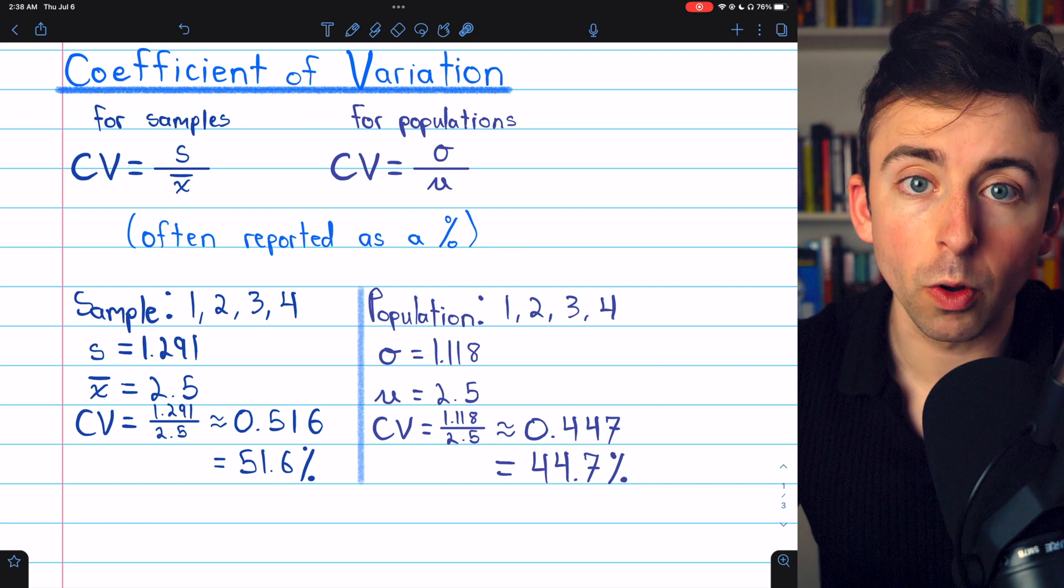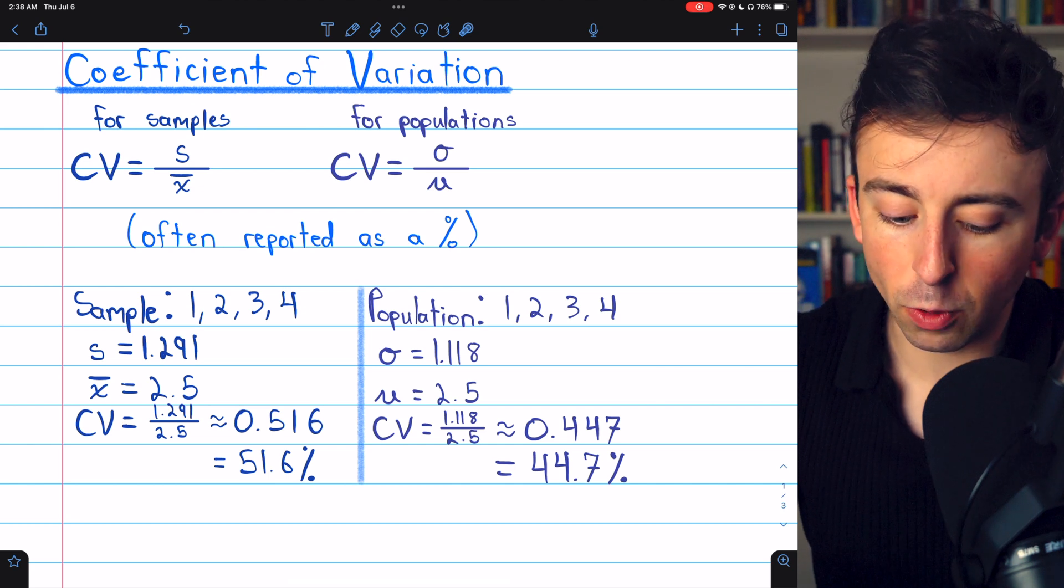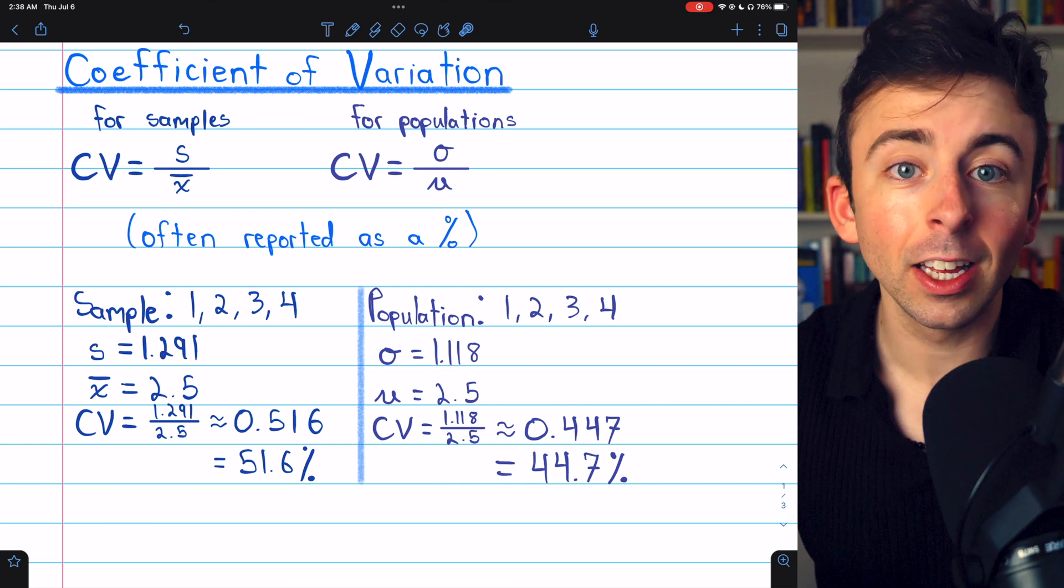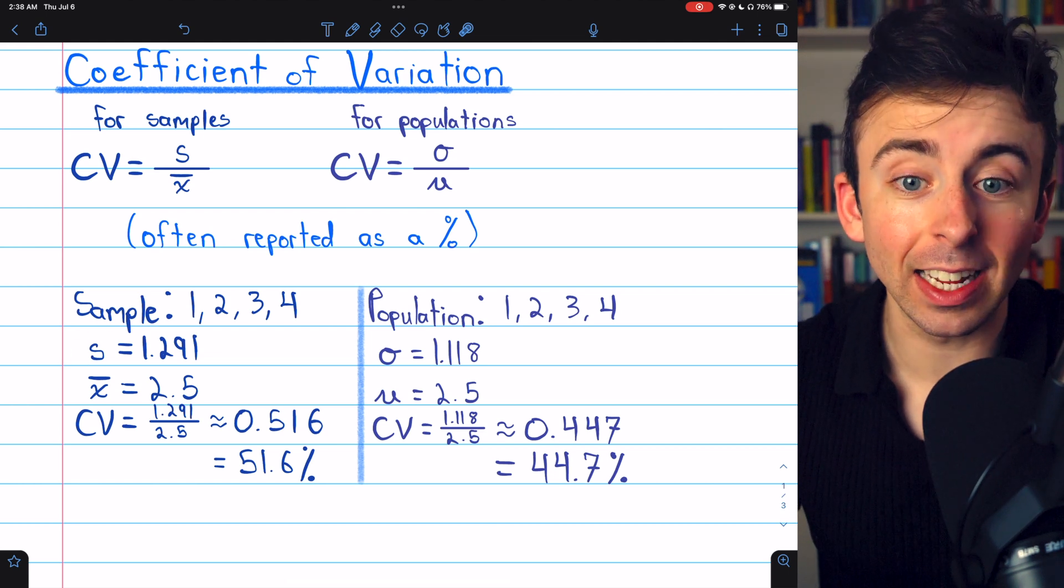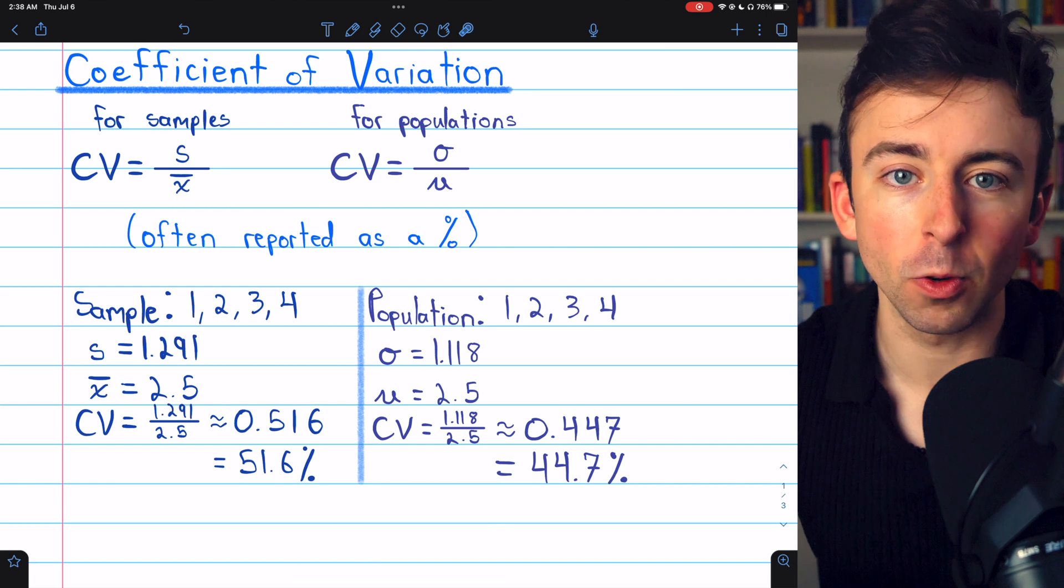If we did the same calculation but for a population, suppose this was the whole population, then the standard deviation would be 1.118, because remember, a sample standard deviation is calculated slightly differently from a population standard deviation.